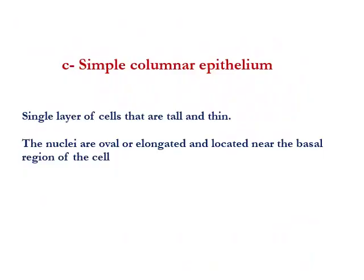The other type of simple epithelial tissue is simple columnar epithelial tissue, or simple columnar epithelium. When we say simple columnar epithelium, that means one layer of elongated cells with an elongated nucleus situated near the base of the cell. There are two types: simple non-ciliated columnar epithelium, and simple ciliated columnar epithelium.